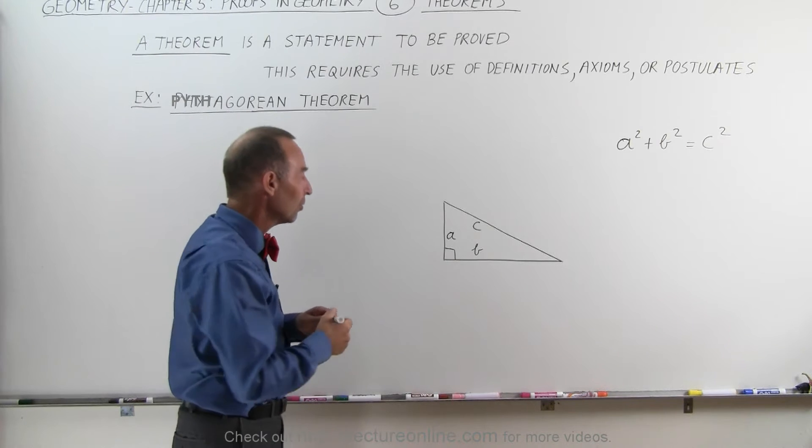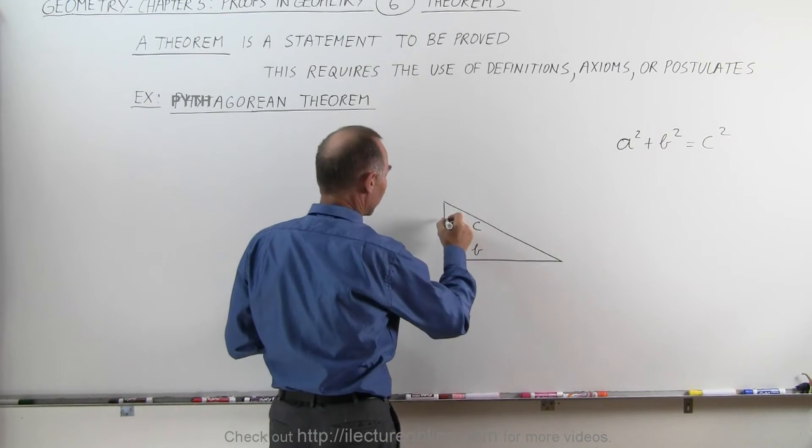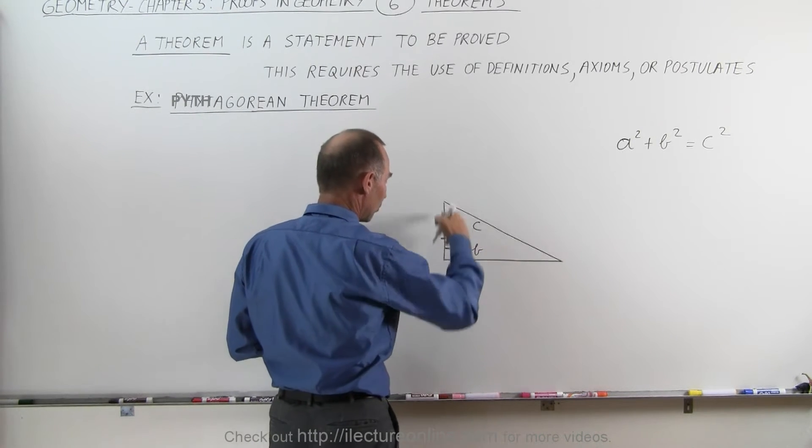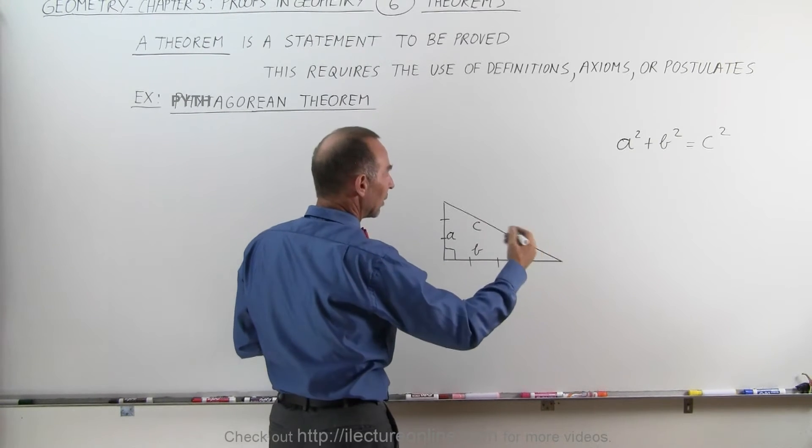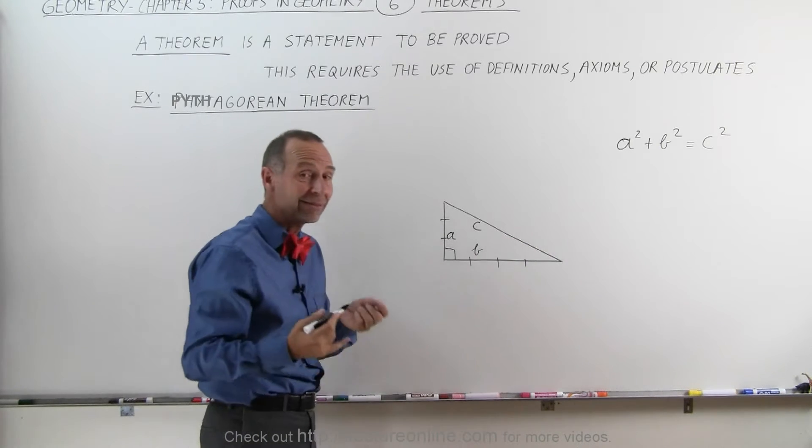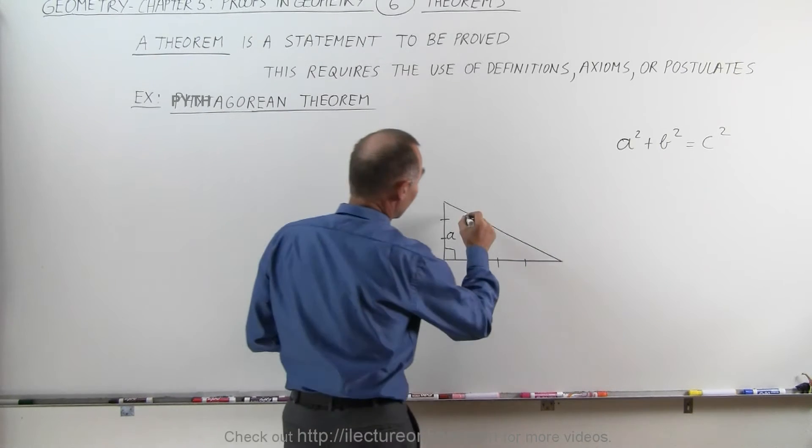An interesting way of proving that would be to say, let's say that this triangle has a side A, which is three units long, and side B is four units long. Then the theorem claims that side C must therefore be five units long.